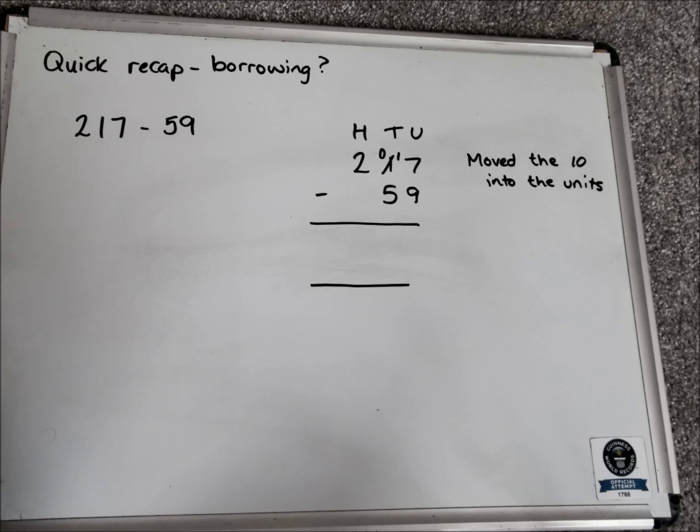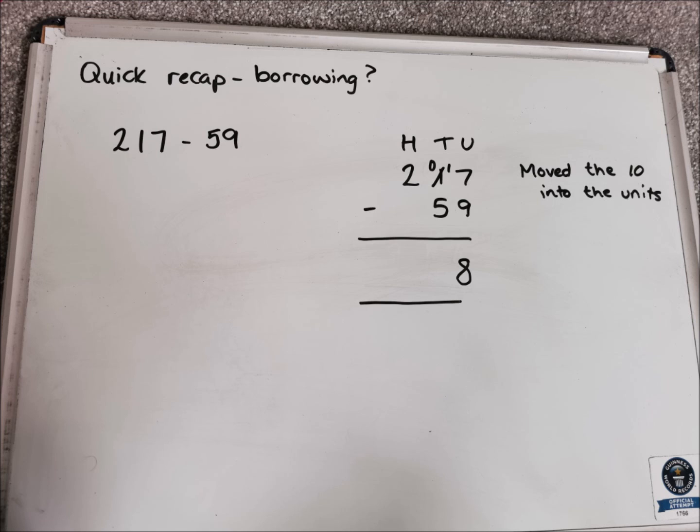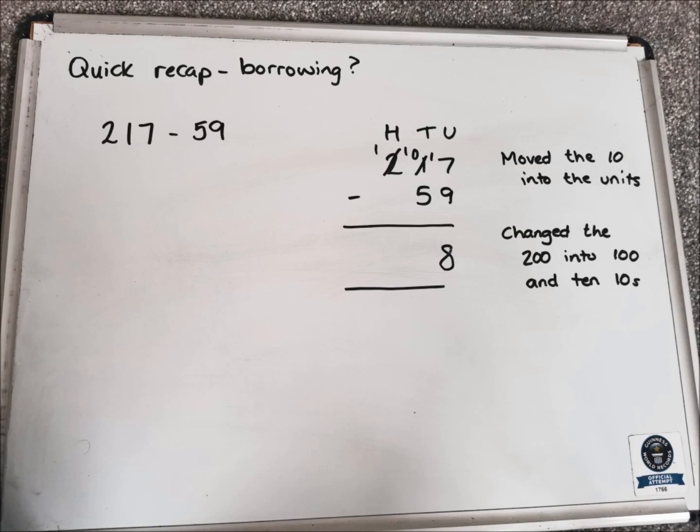We now can do 17 take away 9, which is 8. So we just put 8 in the answer column there. Into the tens column now, we've got 0 take away 5. So we're going to have to borrow from the hundreds column this time.